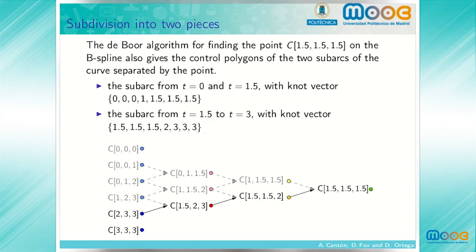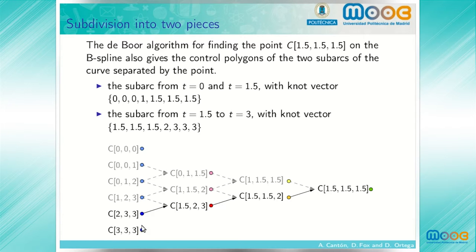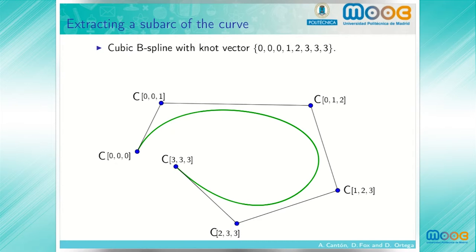For the other sub-arc, from t equals 1.5 to t equals 3, we have a control polygon given by three points obtained by the DeVore algorithm and two points from the original control vertices of the initial curve. This control polygon has knot vector given by 1.5, 1.5, 1.5, 1.5, 2, 3, 3, 3, and this can be obtained by evaluating the polar form on the corresponding entries. In a similar way, we can extract a sub-arc of the curve.